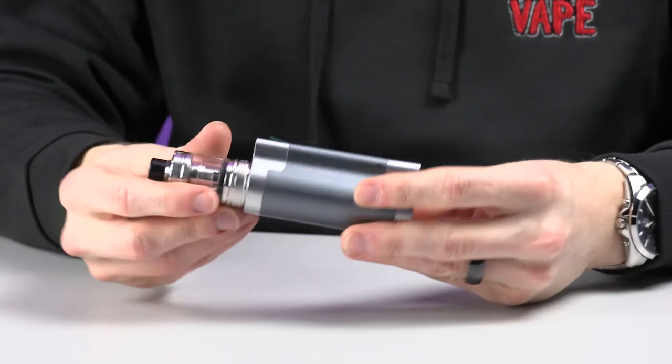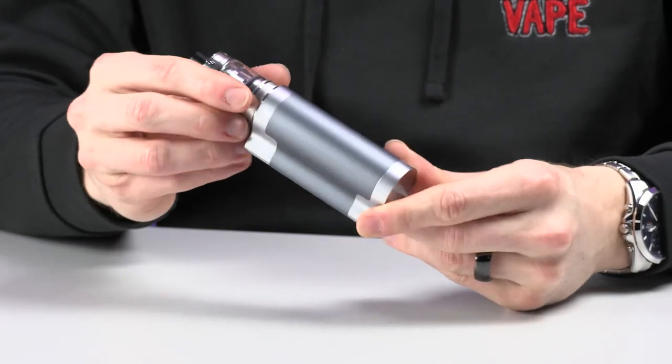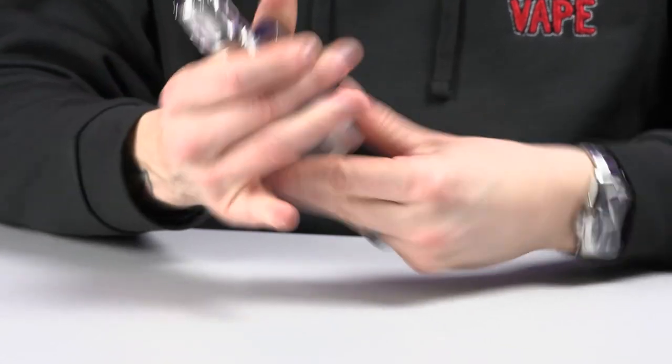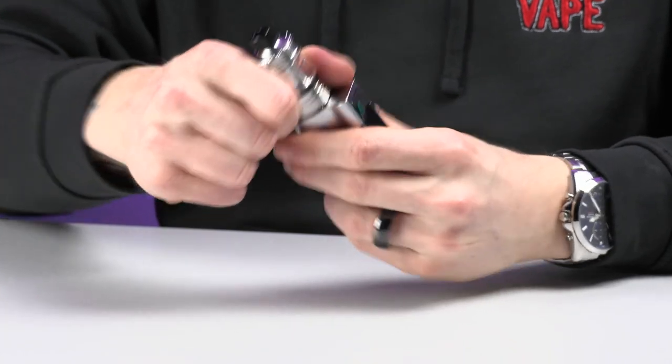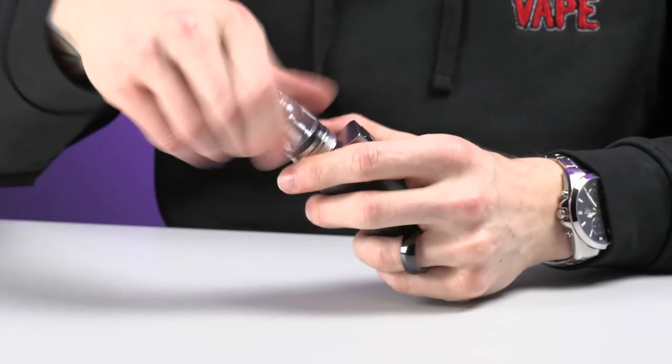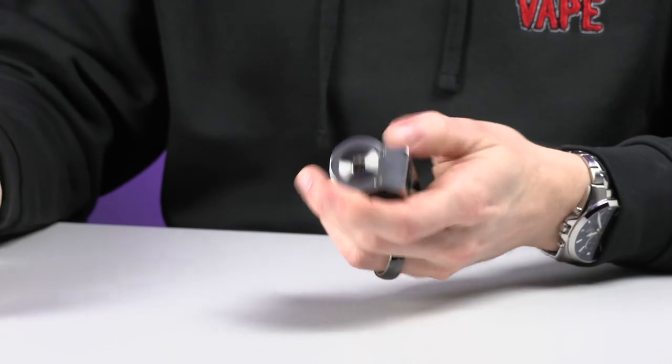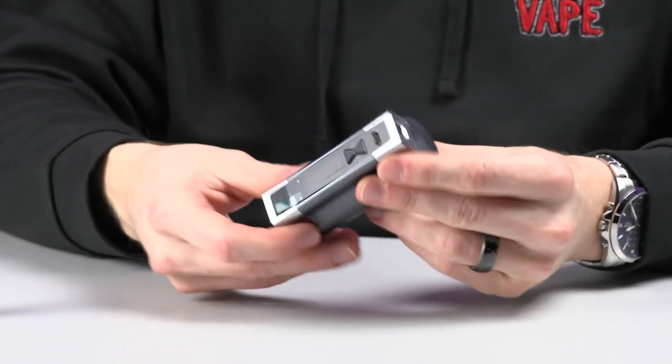And lastly, we get the device. The device is very stylish. I really like that molded shape just here because it fits in your hand really well, actually. On the top, we have the Nautilus 3 tank, which we will take a look at in a minute. And then on the bottom just here, we have the Xelos 3 kit.